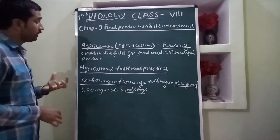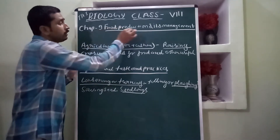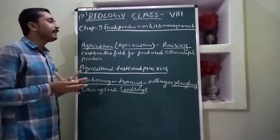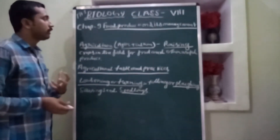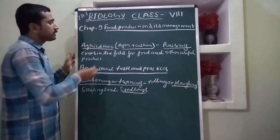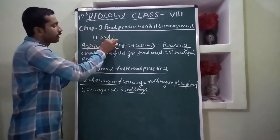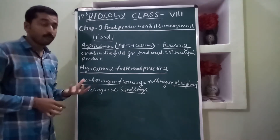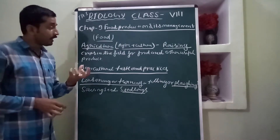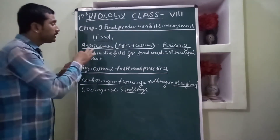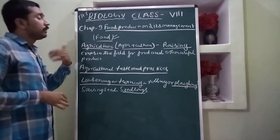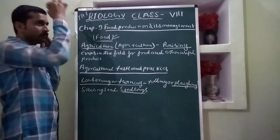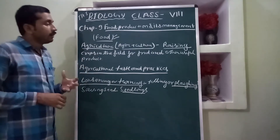Our chapter is food production and its management. As you know, all animals — from unicellular to multicellular — need food, because food supplies different types of vitamins and minerals, and productive food also helps in the repairing of the body. All animals depend on food for surviving on this earth.